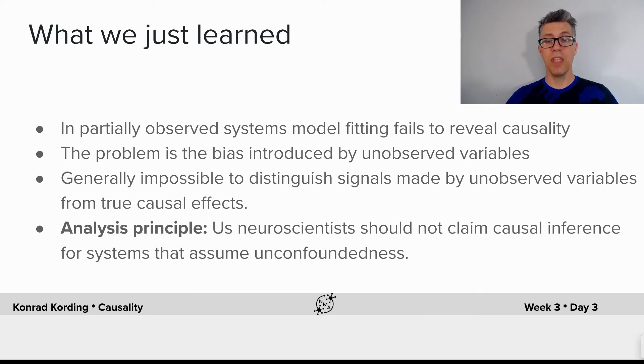There's an analysis principle here. As neuroscientists, we should not claim causal inference for systems if the methods that we require have to assume unconfoundedness. We cannot have unconfoundedness and that's why in most systems we cannot have causality unless we perturb the systems.